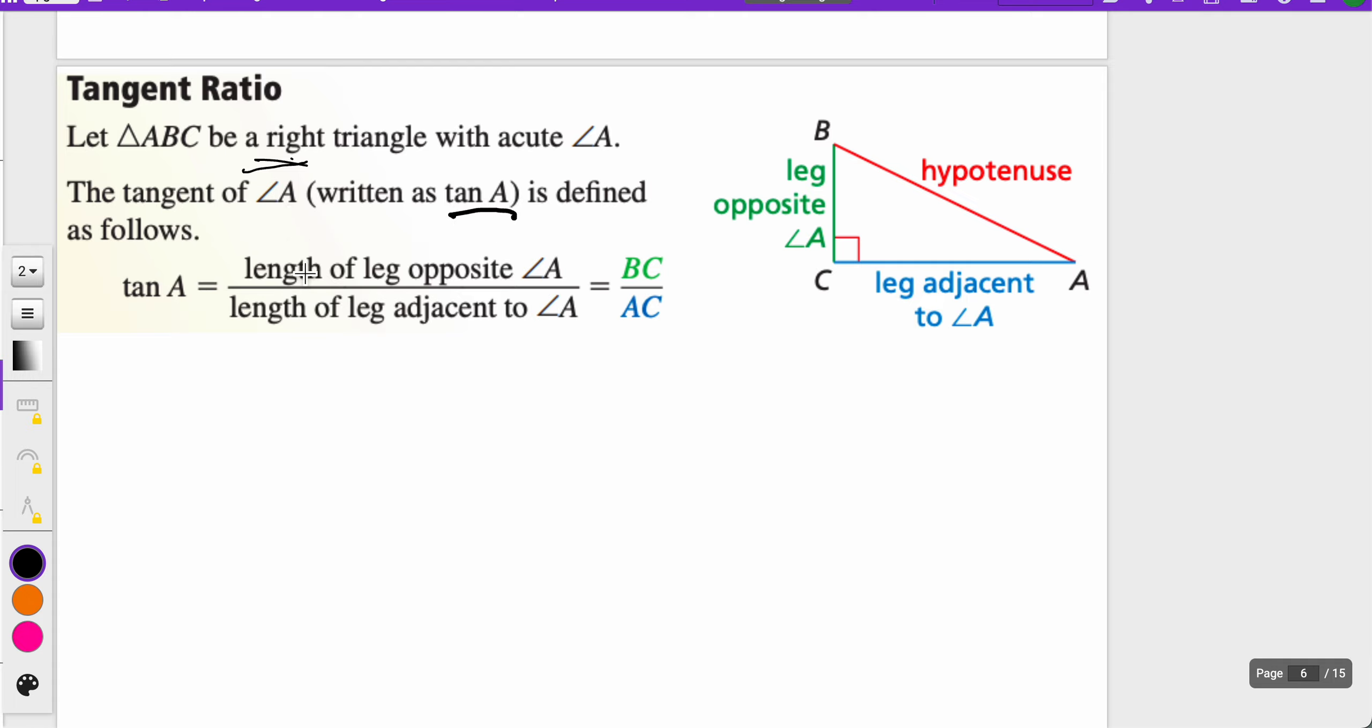You're going to look at angle A and find the opposite leg over the adjacent leg. The opposite leg in this case is BC, which is the green side. Adjacent leg is AC, which is the red side, which is why we are able to remember tangent as opposite over adjacent.